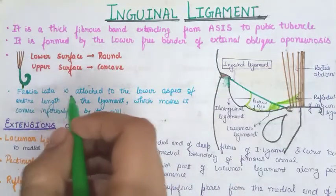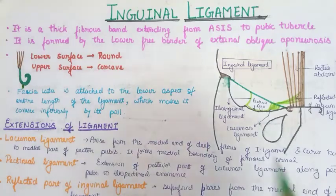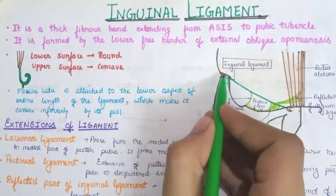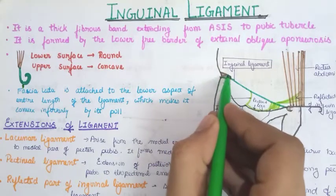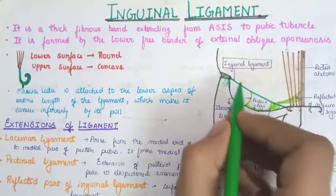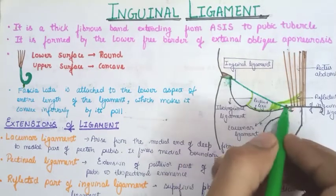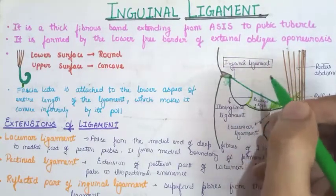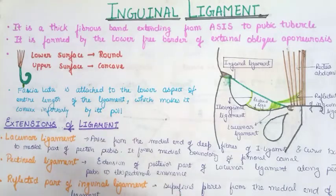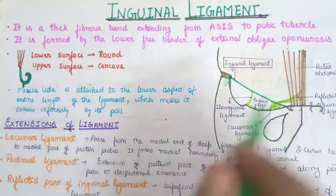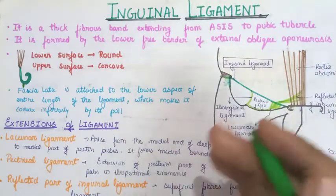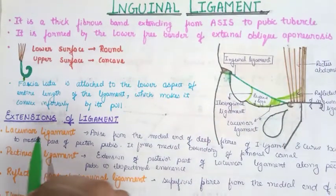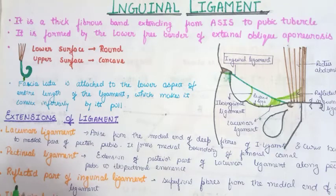As seen in the diagram, the inguinal ligament extends from the ASIS to the pubic tubercle and is formed by the folding of the external oblique aponeurosis. The ligament modifies itself and forms a number of extensions. The four major extensions are: the lacunar ligament, the pectineal ligament, the reflected part of the inguinal ligament, and the ilioinguinal ligament.